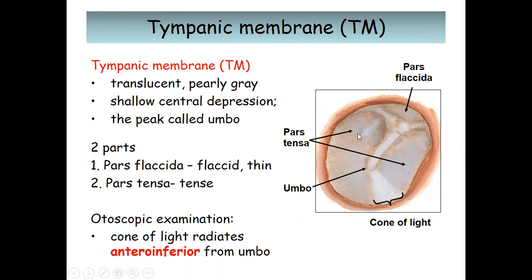The tympanic membrane is a translucent pearly gray structure. It has a shallow central depression, and the peak is known as the umbo. It has two parts: the pars flaccida (thin) and the pars tensa. During otoscopic examination, you can see a cone of light that radiates anteroinferior from the umbo. The nerve supply: the external part is supplied by the auriculotemporal nerve, which is the mandibular division of the trigeminal nerve. The internal part, lined by mucous membrane, is supplied by the glossopharyngeal nerve (ninth cranial nerve).